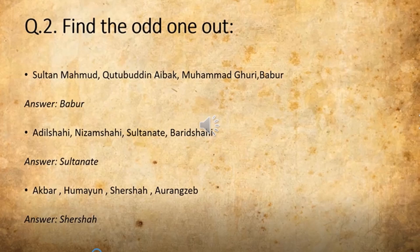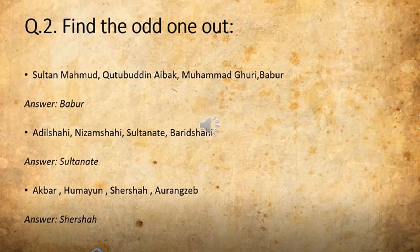And the third one is: Akbar, Humayun, Sher Shah, and Avanteh. The other three were related to the Mughal Empire and one was from the Sultanate — so that is the odd man out. Study in this way. Understand the question so that you can get the answer. We have revised question number two once again.